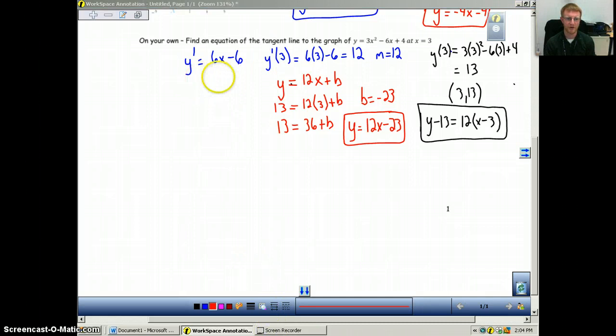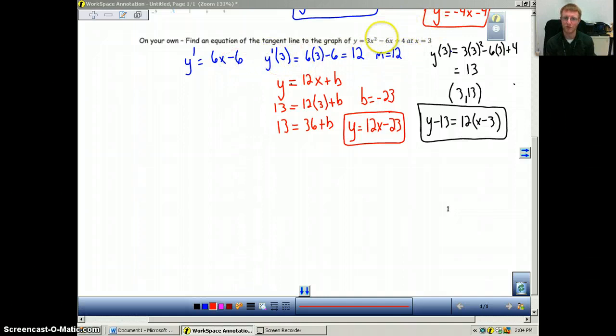Alright, so what we have here is we have our derivative is 6x minus 6. Plug in our value of 3 to get our slope. Our slope is 12 for this tangent line. Then we plug our x equals 3 into our original function to get our y value. So this is the point that we're dealing with, 3 comma 13.